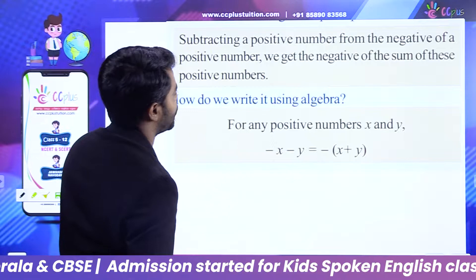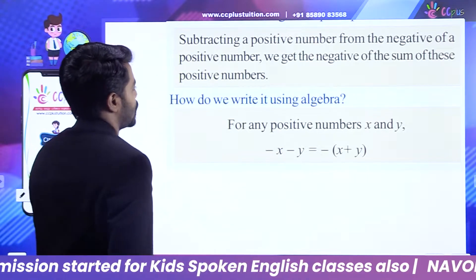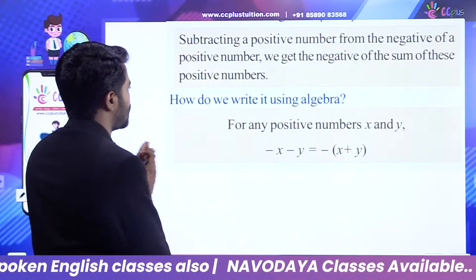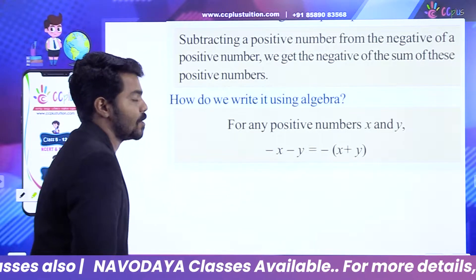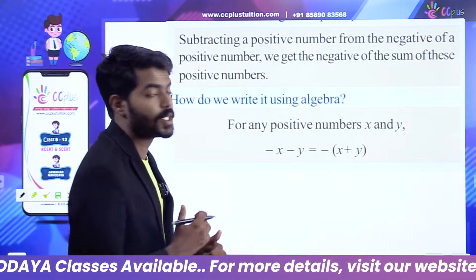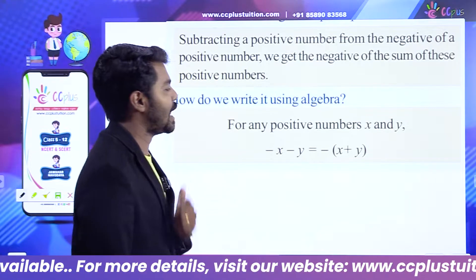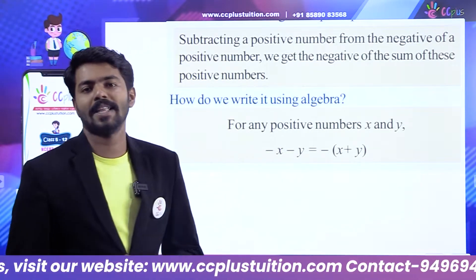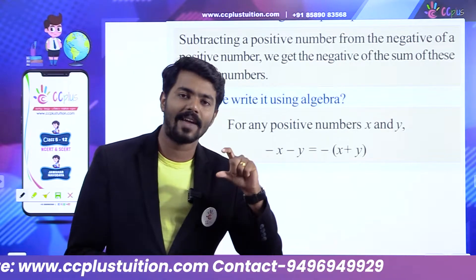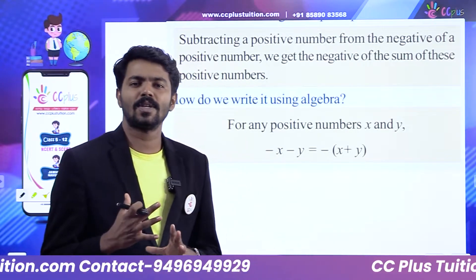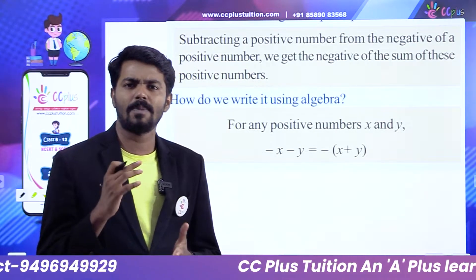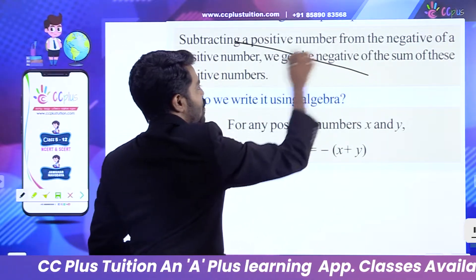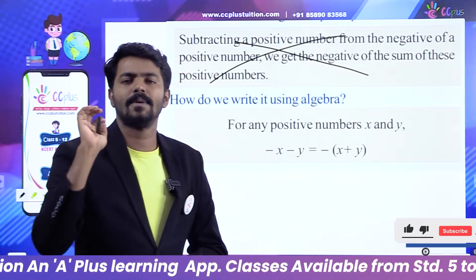We are going to subtract a positive number from the negative. The negative of a positive number gives us the negative of the sum of those positive numbers. How do we write it using algebra? We are going to represent this algebraically and show you the math.